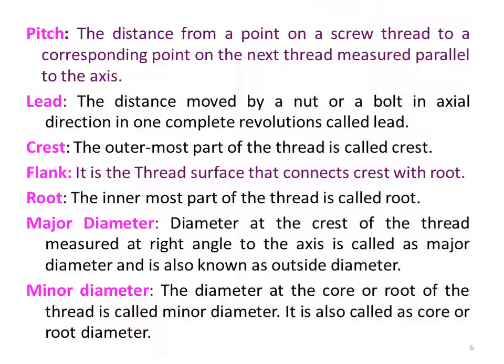What is the major diameter of a screw thread? The diameter at the crest of the thread, measured at right angles to the axis of the screw thread, is called the major diameter, also known as the outside diameter. What is the minor diameter? The diameter at the core or root of the thread is called the minor diameter, also known as the core or root diameter of a screw thread.